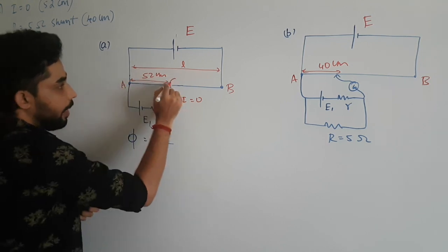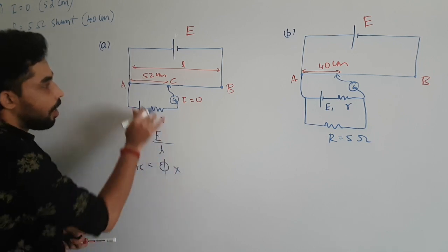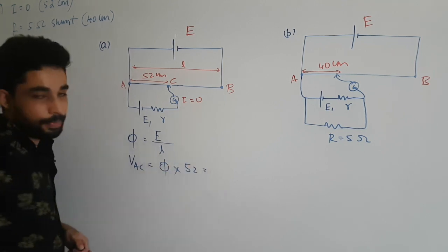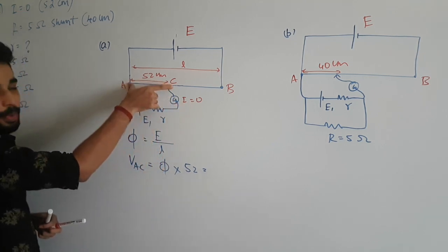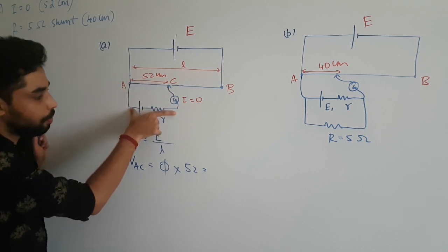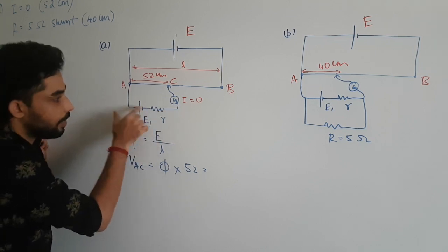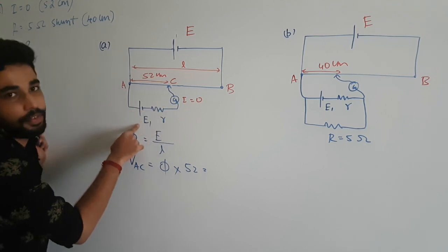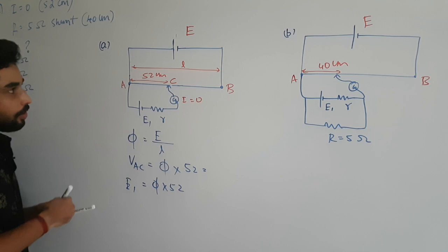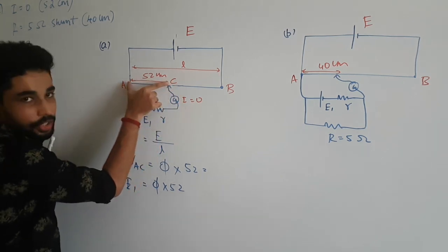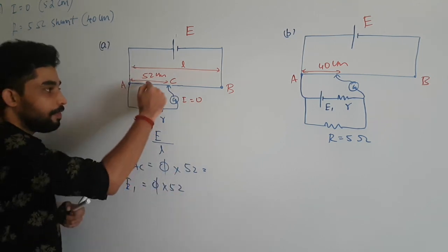If you take the point at 52 centimeters, the potential across this point — I'll call it AC — is potential per unit length (k) times 52 centimeters. Since there is no current flow in this circuit, the potential across AC has to equal the EMF of the cell, because with no current there is no drop across the internal resistor. So I can write e1 = V_AC = k × 52 cm. The potentials are equal and there is no potential difference, hence no current flows.